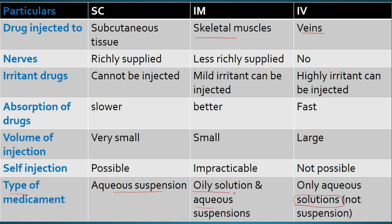Oily injection can be administered through only the IM pathway. Now we are going to the second particular, that is nerves. In case of nerves, subcutaneous tissue is richly supplied with nerves. In case of intramuscular, it is less richly supplied. So nerves are present in abundance in case of subcutaneous tissue.